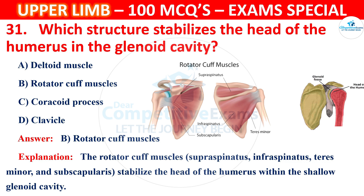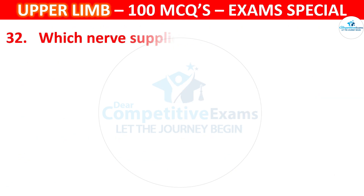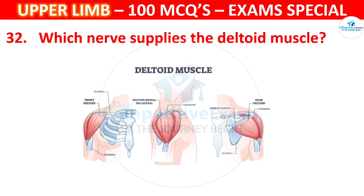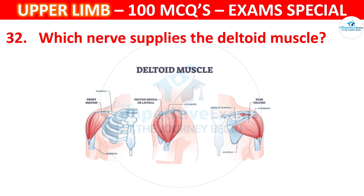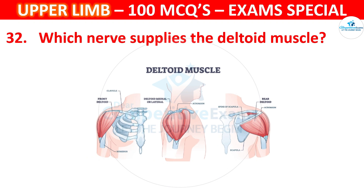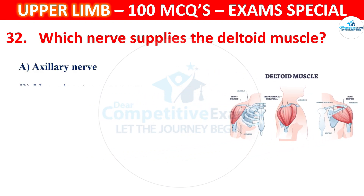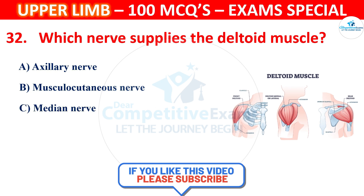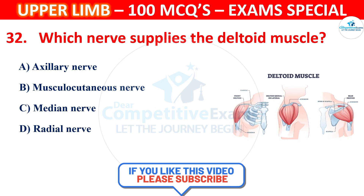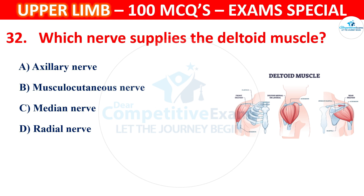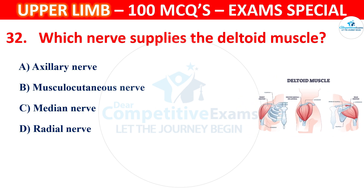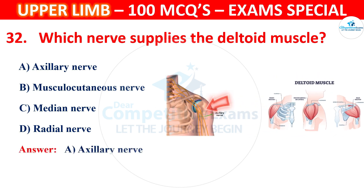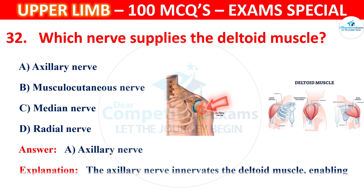Question number 32: Which nerve supplies the deltoid muscle? Options: axillary nerve, musculocutaneous nerve, median nerve, or radial nerve. The correct answer is A, axillary nerve. The axillary nerve innervates the deltoid muscle, enabling shoulder abduction.